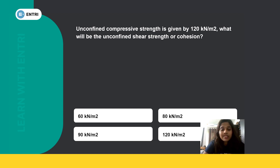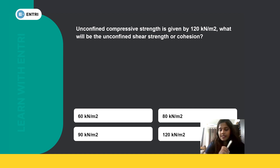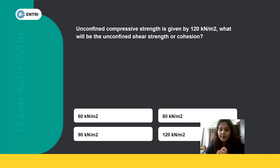Next question: the unconfined compressive strength is given as 120 kN/m². What will be the unconfined shear strength, or cohesion? That is, given the unconfined compressive strength, we need to find the cohesion — the unconfined shear strength.